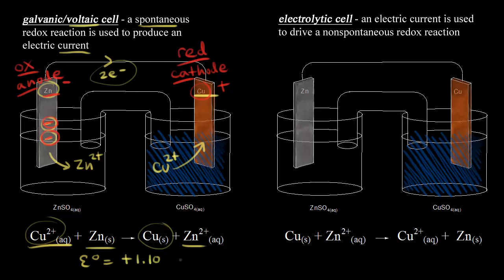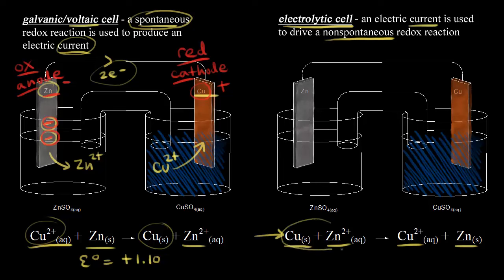A positive value for your cell potential means a spontaneous reaction, so we produce an electric current. Now let's compare that voltaic cell to an electrolytic cell. An electrolytic cell uses an electric current to drive a non-spontaneous redox reaction. Looking at the overall reaction, we're starting with solid copper and zinc two-plus ions in solution, going to copper two-plus ions in solution and solid zinc — the reverse of the voltaic reaction. To find the standard cell potential, we take the negative of that value.